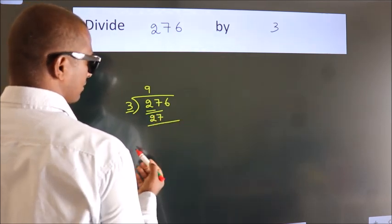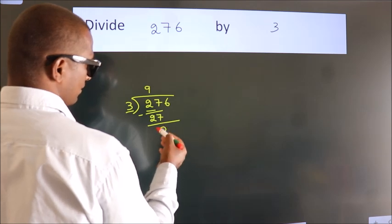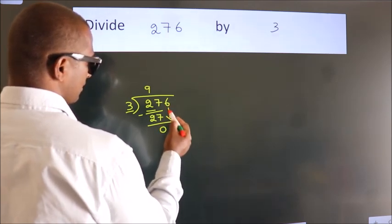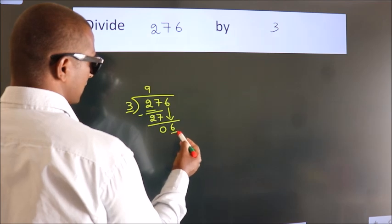Now we should subtract. We get 0. After this, bring down the beside number. So 6 down.